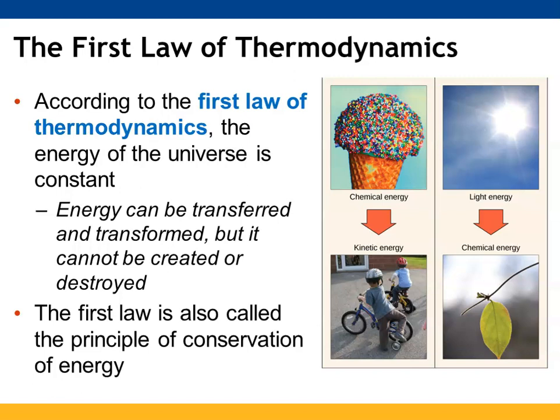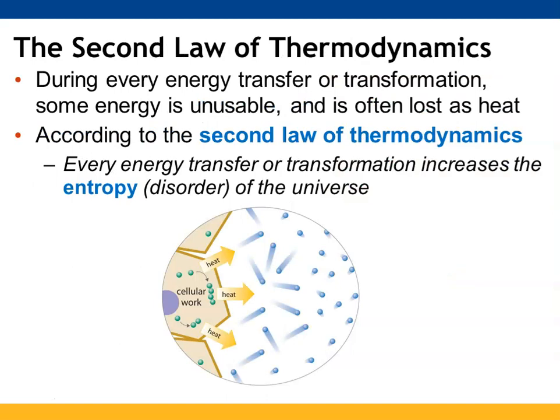The first law of thermodynamics is that you can't create or destroy energy, but you can convert it from one form to another — similar to conservation of mass. The second law of thermodynamics is that when energy transformations occur, some energy gets lost in the form of heat. That energy is used to increase the entropy of the universe, meaning all energy changes result in an increase in chaos and disorder in the universe.